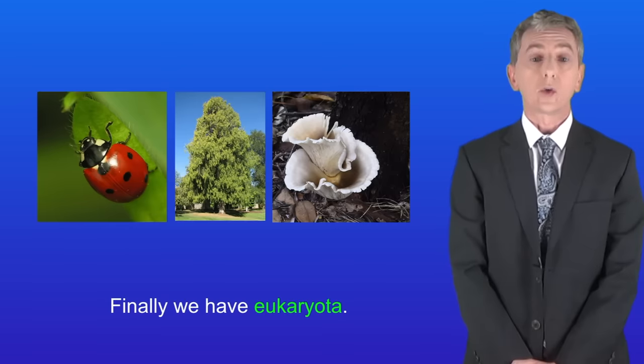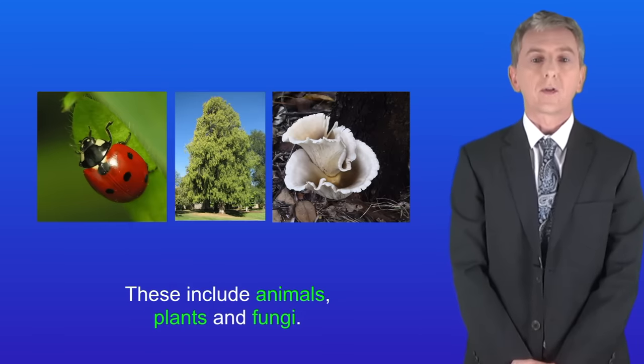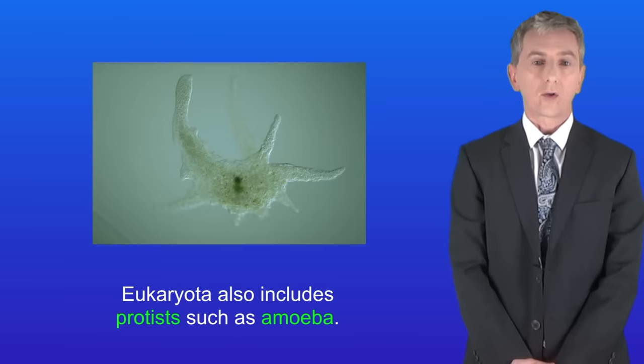And finally we've got eukaryota. These include animals, plants and fungi. Eukaryota also includes protists such as amoeba.